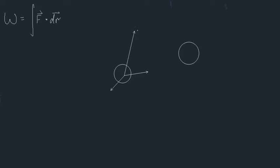And we wanted to find out the work done by all of these forces on this object to make the ball move over there. As I showed in the last example, what we could do is calculate the work done by F1, add that to the work done by F2, and add that to the work done by F3, and sum all of those results up together to get the total work done. Another way we could do it is by calculating the net force, which is just F1 plus F2 plus F3. Then we could calculate the work done by that net force, and that will be our total work done — a shortcut for calculating the total work done by all the forces.